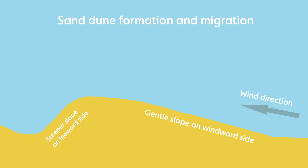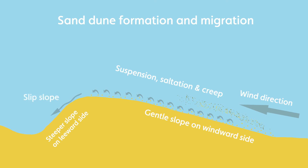The movement of sand produces dunes that have a triangular cross section with a long gentle slope on the windward side facing the sea, and a shorter steeper slip slope on the leeward side. Particles are transported up the windward side, reach the crest, and then slide down the slip slope.